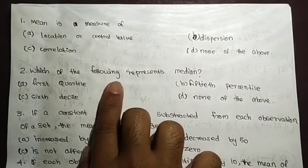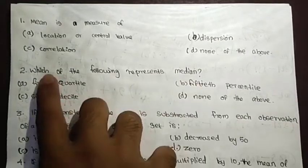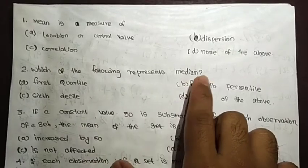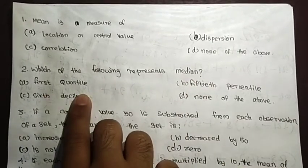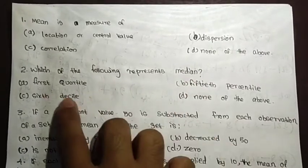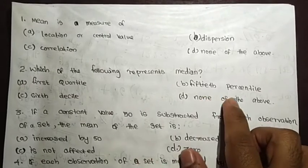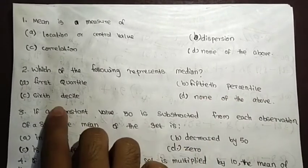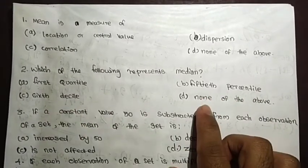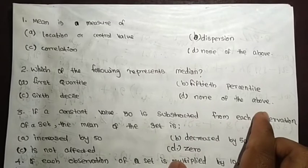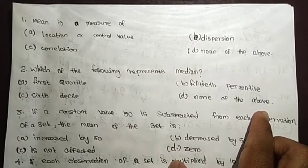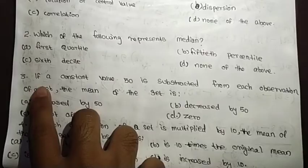Question 2: Which of the following represents the median? The options are first quartile, fifth percentile, sixth decile, and none of the above. The answer is the fifth decile.